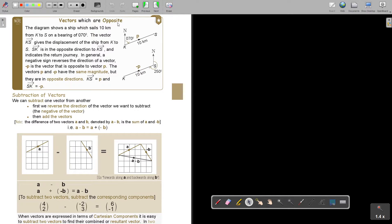Vectors which are opposite. The diagram shows a ship which sails 10 kilometers from K to S on a bearing of 7 degrees. The vector KS gives the displacement of the ship from K to S. SK is the opposite direction to KS, and indicates the return journey. In general, a negative sign reverses the direction of the vector. Negative P is the vector that is opposite to vector P. The vector P and negative P have the same magnitude, but they are in opposite directions. So if KS is P, then SK will be negative P. As soon as I change the direction, I must put a negative in front of it.